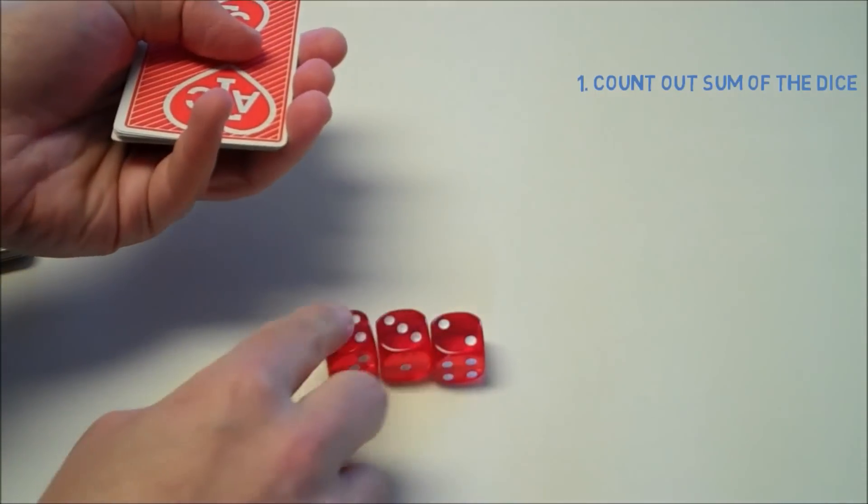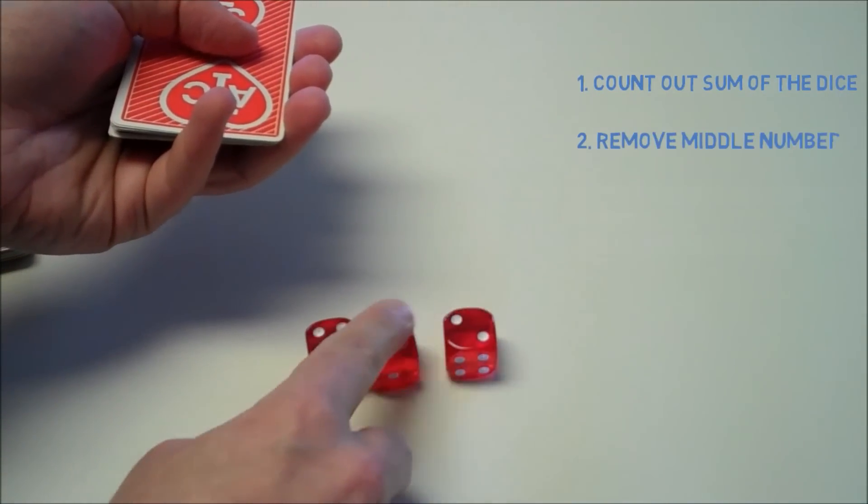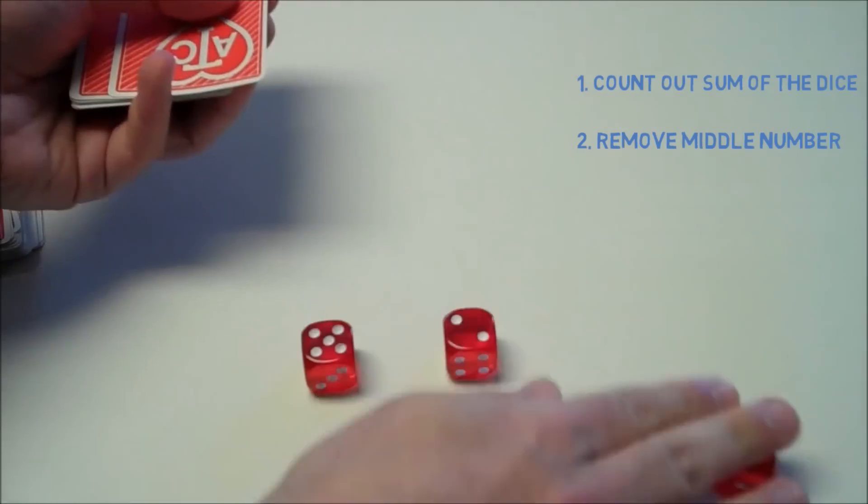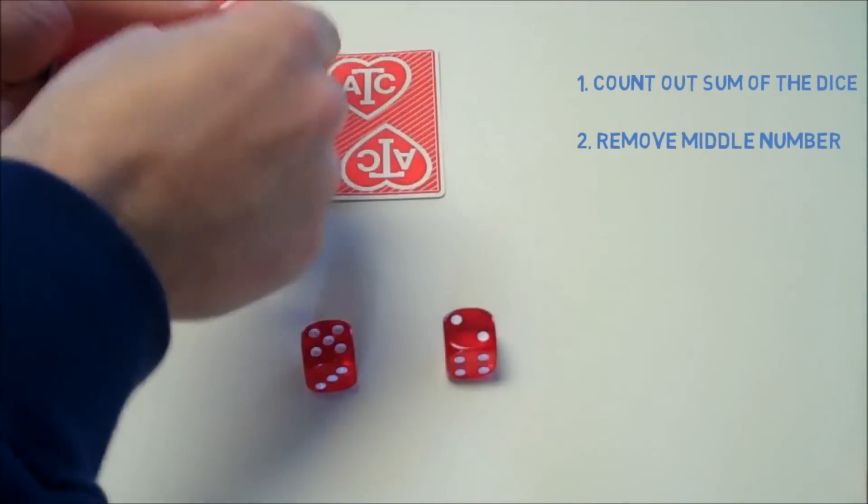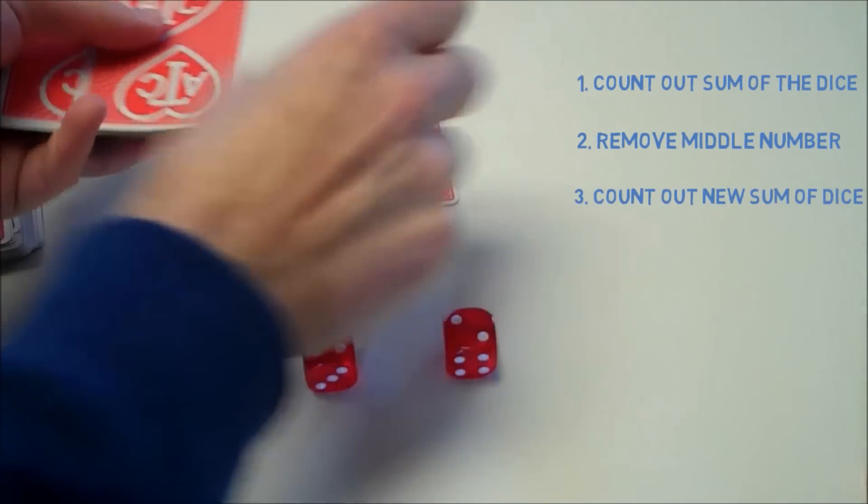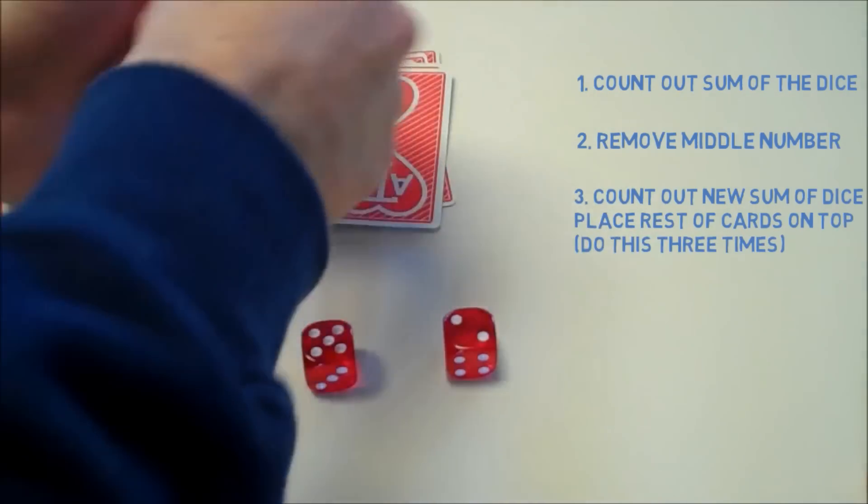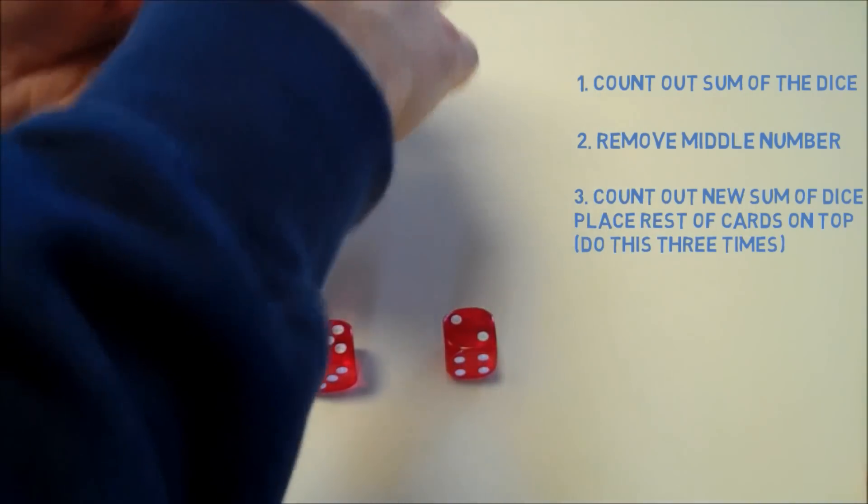Now what we're going to do is shuffle the cards again. We remove the middle number, which is three. And we're going to count out seven cards, which is the sum of the remaining dice. So we count out seven cards, put the deck on top.